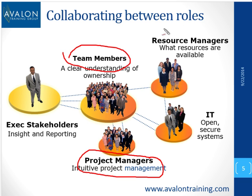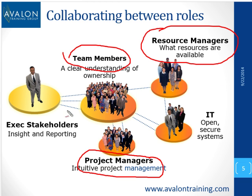Then we have the resource managers. Resource managers may be involved in approving timesheets if an organization has deployed timesheets, and may be involved in assigning their staff to projects. The project managers would assign a generic role, and the resource managers would go in and confirm what named resource — which staff person — will replace that generic role to perform the work. We also have stakeholders with a vested interest in project status, and we want to give those stakeholders insight with good views in our PWA environment and reports, possibly in the form of dashboards.